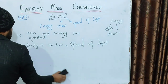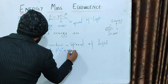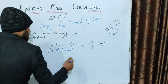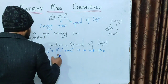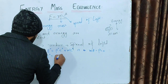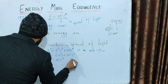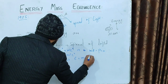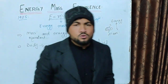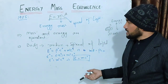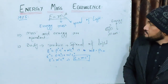E is equal to mc squared is actually a simplified form. The complete form of this equation is: E squared is equal to p squared c squared plus m squared c to the fourth. When an object is at rest, momentum p equals zero, and the equation reduces to E equals mc squared, which gives the rest mass energy of the object.